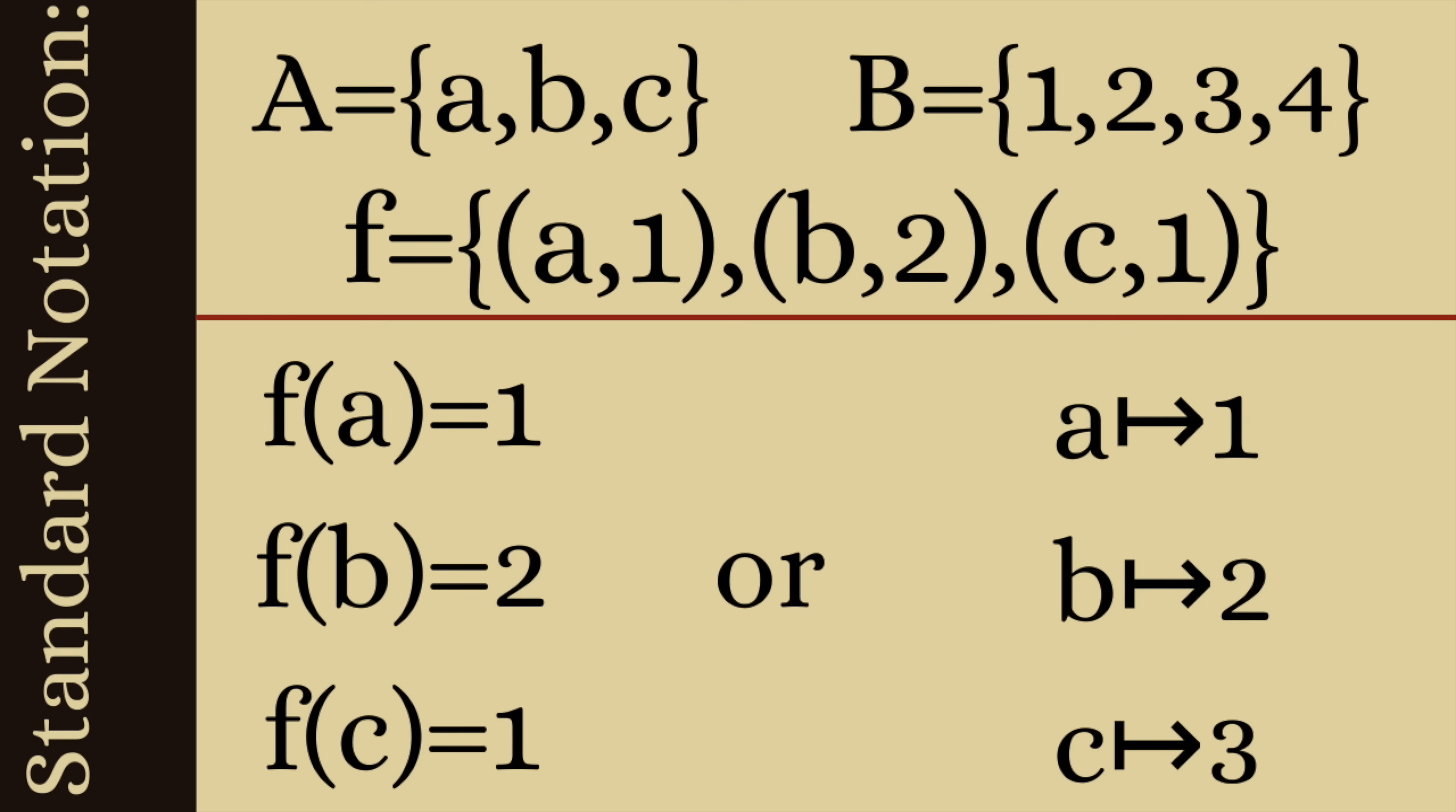Now moving back to our original example let's look at some more standard notation for writing down a function. So again we've got the same thing f is defined to be {(a,1), (b,2), (c,1)}. But often we would write this as f(a)=1, f(b)=2, and f(c)=1.